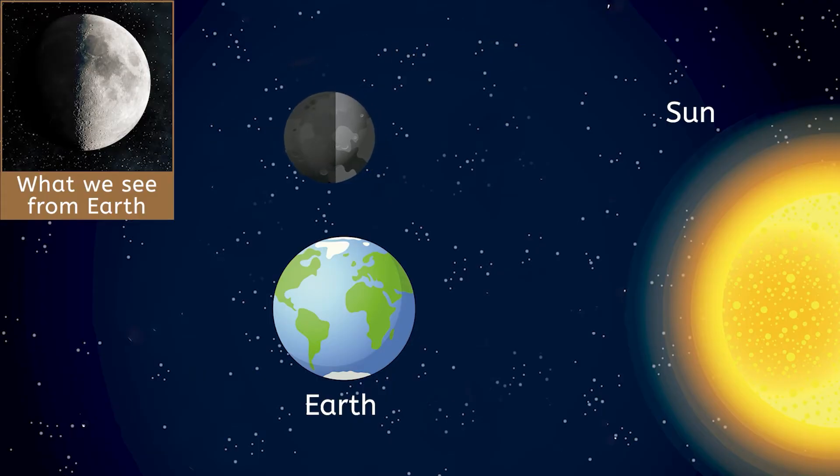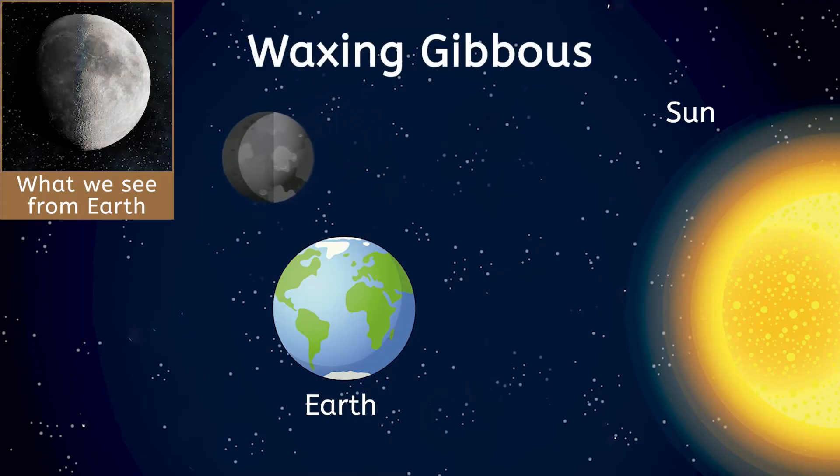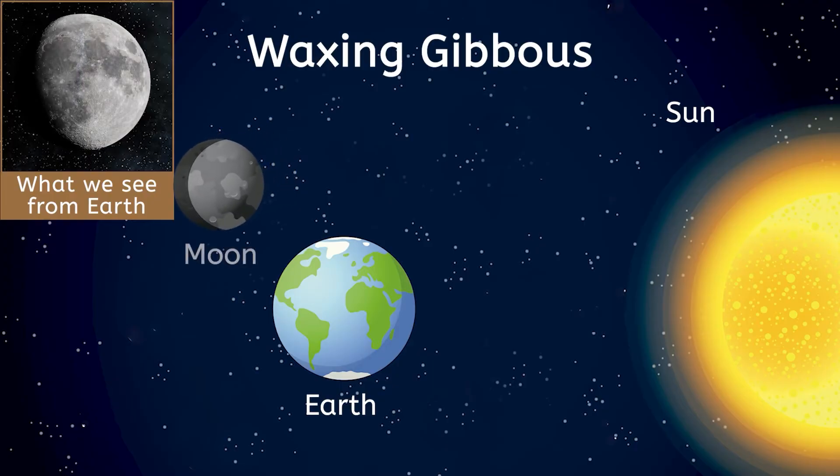As the moon continues its orbit, it enters the waxing gibbous phase. Gibbous means that more than half of the moon is lit up, but it's not yet a full moon. Most of the moon is lit up with just a small shadow on the left.